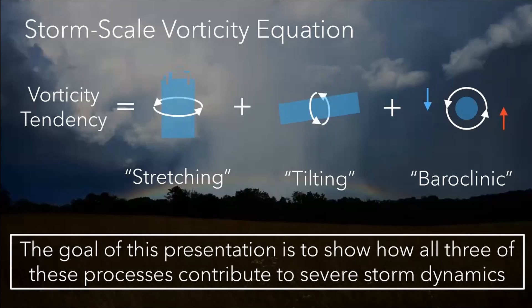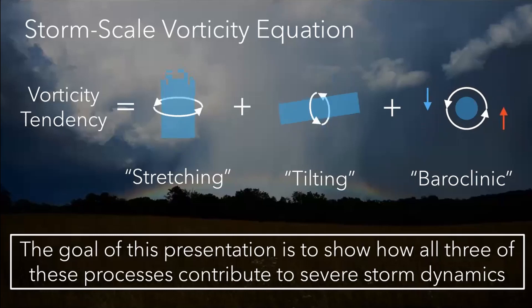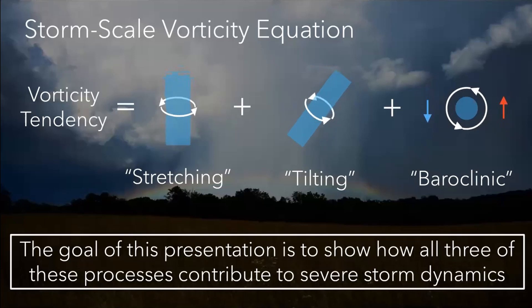The second term is tilting. You can think of it like: you have a tube moving along and it encounters an updraft — it's going to get tilted into the vertical. It doesn't actually create vorticity; it just reorients it in 3D space. And the last term, probably one of the more complicated ones to intuitively understand, would be baroclinic generation. The most surface-level way to describe it is that it's due to gradients in density across the fluid that can act to spin up vorticity. We're going to see how all three of these processes contribute to severe storms dynamics. This will be heavily focused on supercells and tornadoes, but a lot of this also applies to squall lines and other modes of convection.